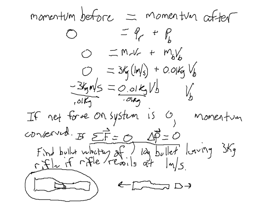Dividing both sides by 0.01 kilograms gives V_B equals minus 300 meters per second, which is a little less than a thousand feet per second — a reasonable velocity for a bullet. The exact velocity depends on the type of gun and bullet. The negative sign means the bullet is traveling in the negative direction, opposite to the rifle, which we could have predicted before working the problem.